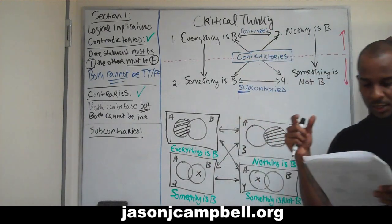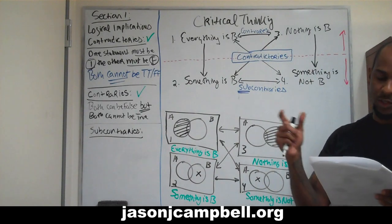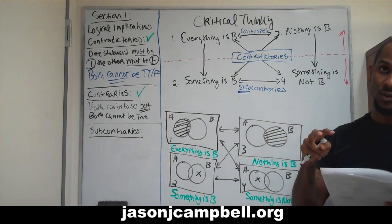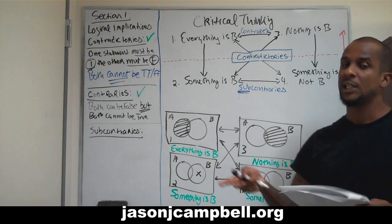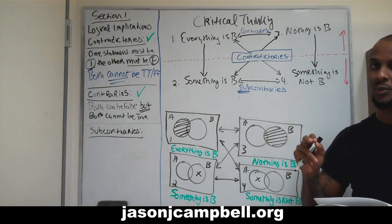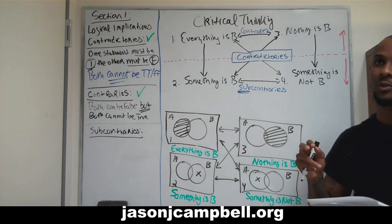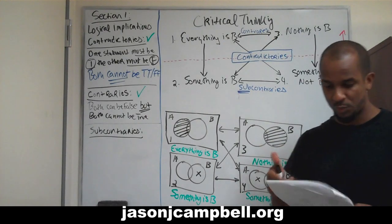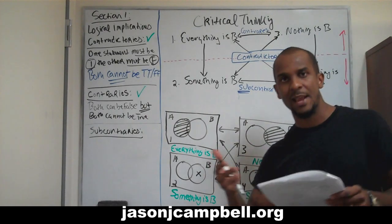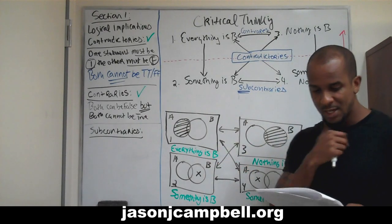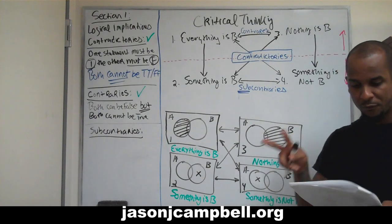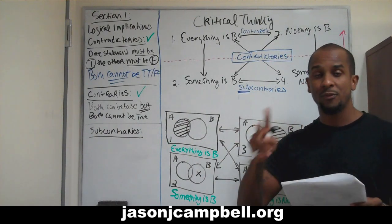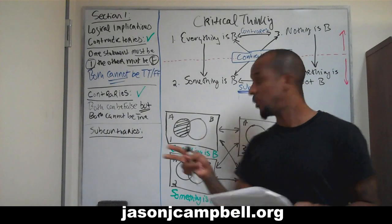Remember in contraries, as we just said, both of the statements can be false, but both cannot be true. It's just the opposite for subcontraries. For subcontraries, both of the statements can be true, but both of the statements can't be false. So what I have in six is two and four can both be true, but two and four cannot both be false.